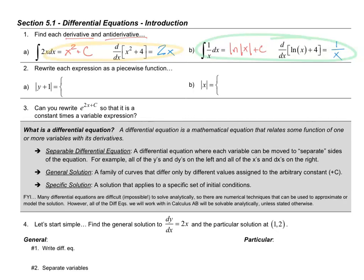Now let's talk about piecewise functions — a blast from the past going back to Algebra 2 and Pre-Calculus. There are two examples: the absolute value of y plus 1 and the absolute value of x. Let's look at the absolute value of x first because it's easier. You know the general graph — it has a corner point, and finding that corner point is when the thing inside the absolute value symbol equals 0. For this function, that happens when x equals 0. So the absolute value of x behaves one way when x is greater than or equal to 0, and a different way when x is less than 0.